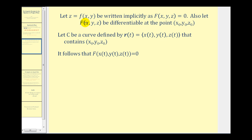We'll start by letting z equals f of x, y be written implicitly as F(x, y, z) equals zero. We'll also let F(x, y, z) be differentiable at the point (x₀, y₀, z₀). Next we'll define a curve by a vector valued function with components x(t), y(t), and z(t) that contains the point (x₀, y₀, z₀) and lies in the surface defined by F.